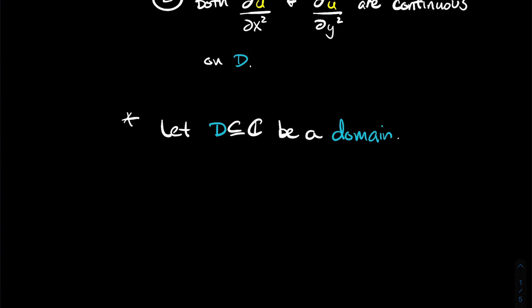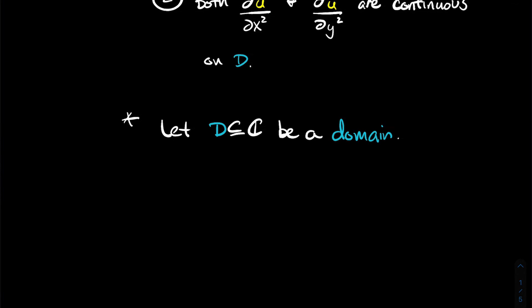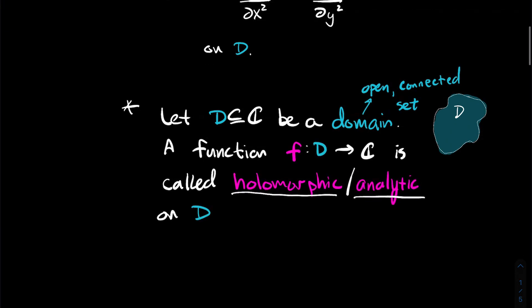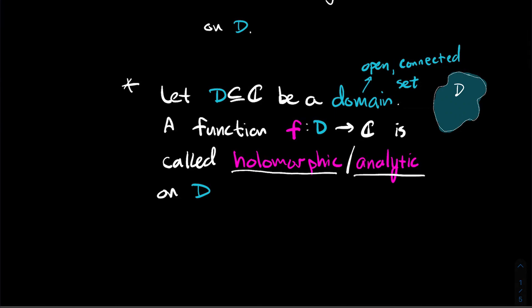Now let's think about D as a subset of the complex plane. The plane R2, the Cartesian plane, we can think of it like the complex plane, just labeled a little differently. Now we're going to let D be a domain, where domain in this context means an open connected set — think of it like a little blob where the boundary is not part of the set, kind of like an open interval where the endpoints aren't included. A function F whose inputs come from D and spits out a complex number, so F is a function of a complex variable, we're going to say it's holomorphic — another word for that is analytic — on D.